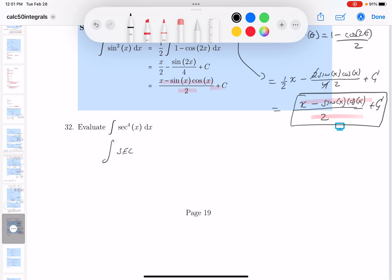So secant squared x, let's see. What do you get? You get 1, or, secant squared is going to be 1 plus tangent squared. Sorry about that. And that's dx, all right?